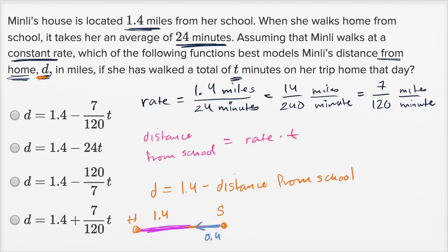And what's that going to be? That's just going to be 1.4 minus the rate times the time. What's the rate? Seven one-twentieths miles per minute. We got the units right. And so D is going to be equal to 1.4 minus seven over 120 t. And if we look at the choices, that's going to be this first choice over here.